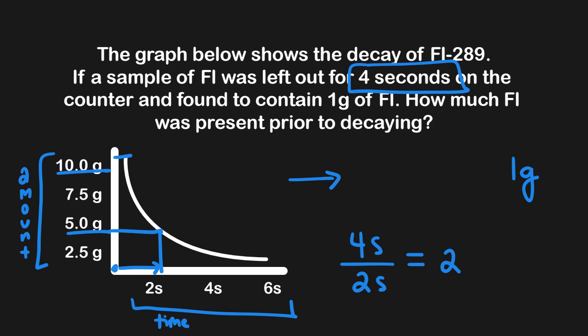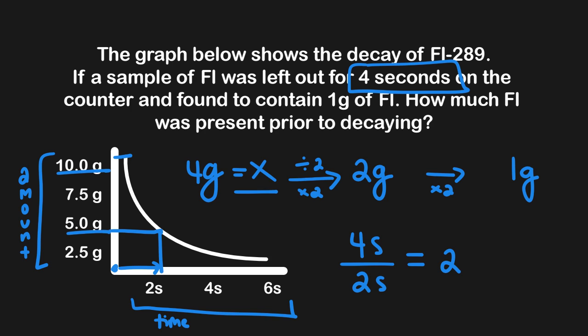We need to draw two arrows, but this time we work backwards from one gram. Normally we divide by two going forward, so working backwards we multiply by two. One gram times two is two grams after reversing the first half-life, and two grams times two is four grams for the original sample. This works out: starting with four grams, after one half-life we have two grams, and after another we have one gram. So four grams was present prior to decay.